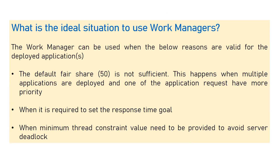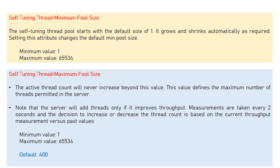For example, a Work Manager for module A with a fair share of 80 and for module B is 20 means 80% of threads from the thread pool are assigned to module A and 20% to module B. This is how fair share works. The ideal situations to use Work Managers are when you have different kinds of applications with different priorities, where you want certain applications to process requests before others.